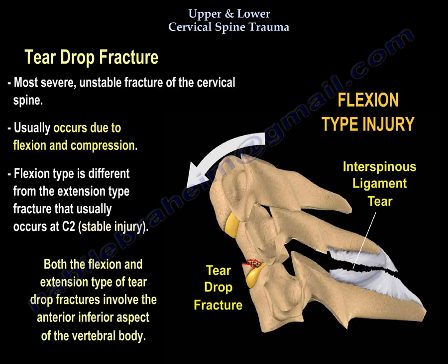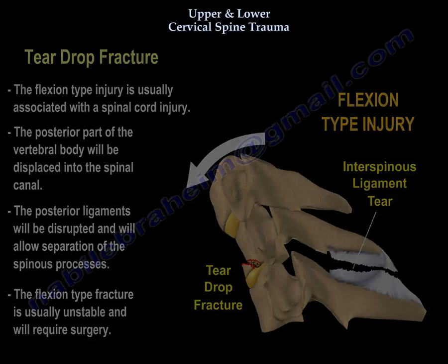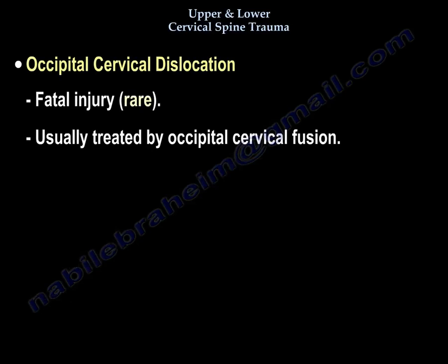Both fracture types involve the anterior inferior aspect of the vertebral body. The flexion-type injury is usually associated with spinal cord injury. The posterior part of the vertebral body will be displaced into the spinal canal, and the posterior ligaments will be disrupted, allowing separation of the spinous processes. The flexion-type fracture is unstable and will need surgery. Occipital-cervical dislocation is a fatal but rare injury, usually treated by occipital-cervical fusion.